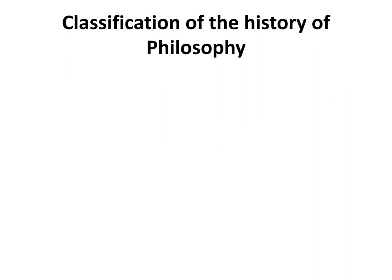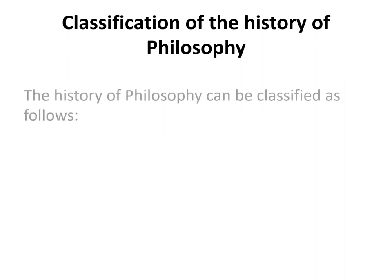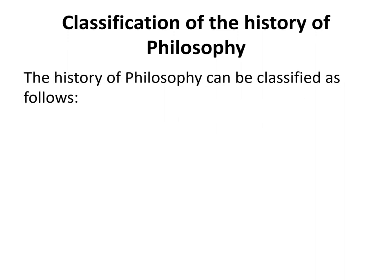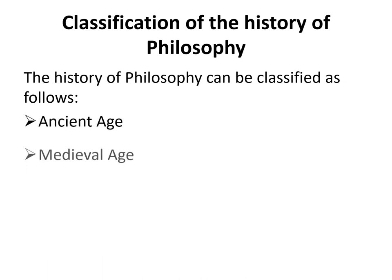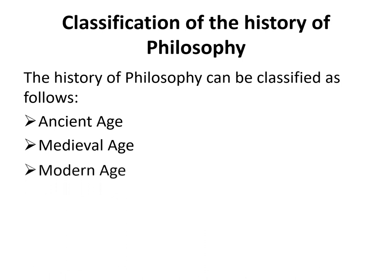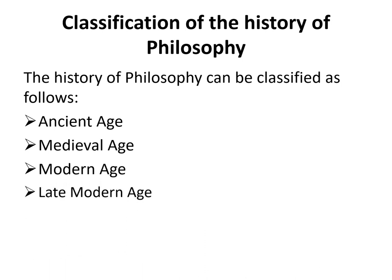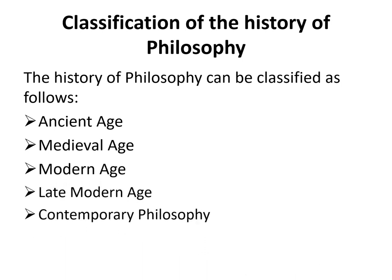Classification of the history of philosophy. The history of philosophy can be classified as follows: Ancient Age, Medieval Age, Modern Age, Late Modern Age, and Contemporary Philosophy.